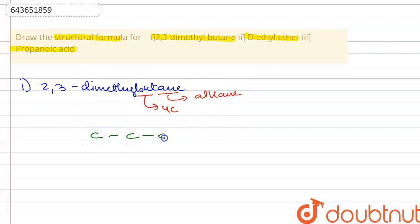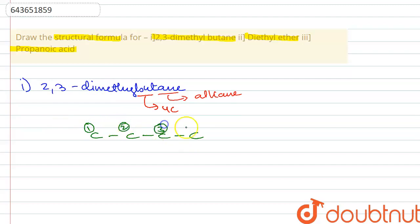So the four carbon atoms are going to be attached with single bonds like this. The next step is to start writing the numbers for them — we can start from anywhere: one, two, three, and four. As you can see, at the second and third position there is a methyl group attached.